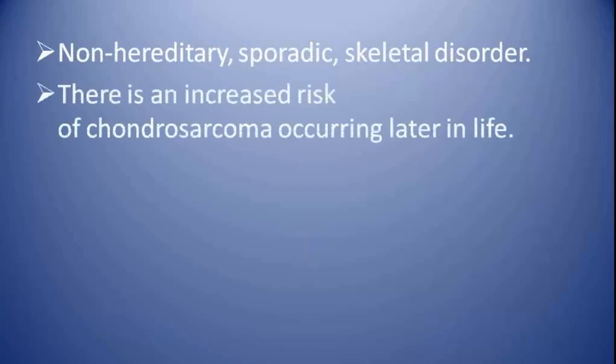This is the case of Ollier disease, or enchondromatosis — a non-hereditary sporadic skeletal disorder characterized by the presence of multiple enchondromas. There is an increased risk of chondrosarcoma, which can occur in later stages of life. The disease is associated with the presence of soft tissue hemangiomas, characterized by phleboliths on radiograph — this situation is known as Maffucci syndrome. I hope you enjoyed the video, thank you.